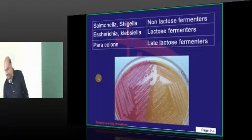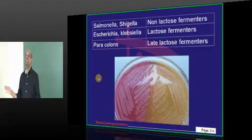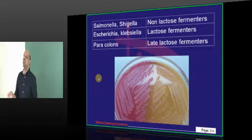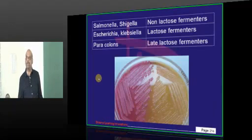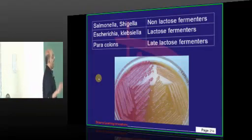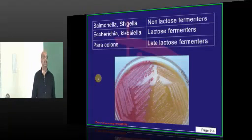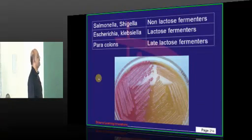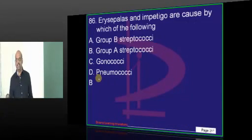Salmonella and Shigella are both twin sisters — they both do not know how to eat sugar, so they are non-lactose fermenters. Escherichia and Klebsiella are both lactose fermenters. And you have some late lactose fermenters — you must know this classification.